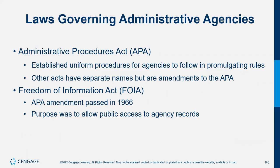The primary law allowing these agencies to exist is the APA — the Administrative Procedures Act. Congress created this law establishing the process by which administrative agencies are formed and the rules they must follow. In 1966, an amendment called the Freedom of Information Act was passed, allowing the public to access government records, with exceptions for classified or national security materials.